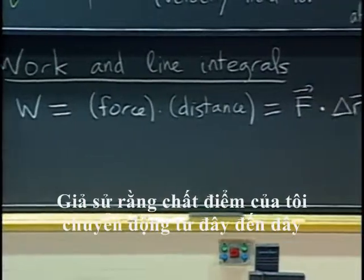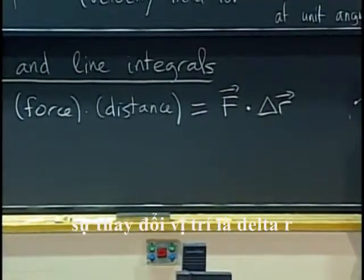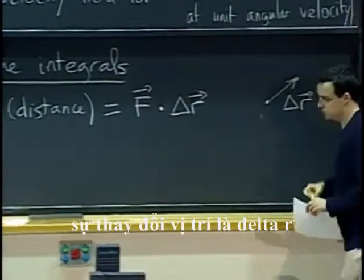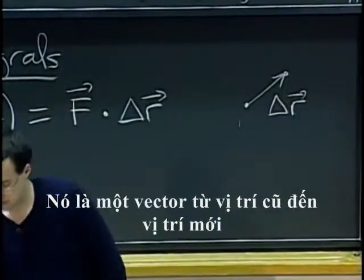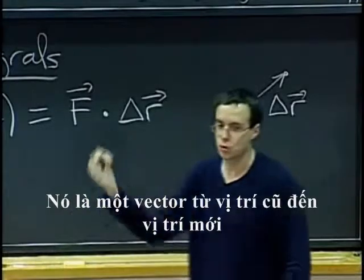So, say that your point is moving from here to here, you have the displacement delta r. That's just the change in the position vector. That's the vector from the old position to the new position.